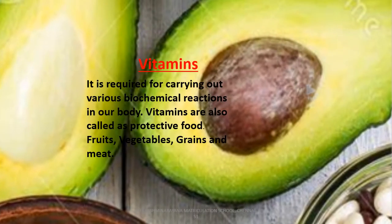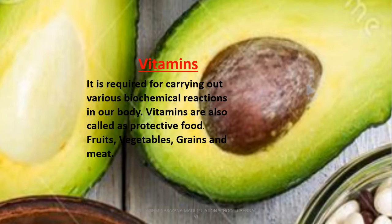Let us see about vitamins. Vitamins is required for carrying out various biochemical reactions in our body. Vitamins is of 6 types. They are Vitamin A, B, C, D, E and K. Vitamin B and C are water soluble. Vitamin A, D, E and K are fat soluble. Vitamins are found in food types like fruits, vegetables, grains and meat products. Vitamins are also called as protective food.